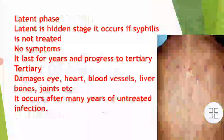Tertiary phase. It damages the eyes, heart, blood vessels, liver, bones, joints, and more. It occurs after many years of untreated infection.